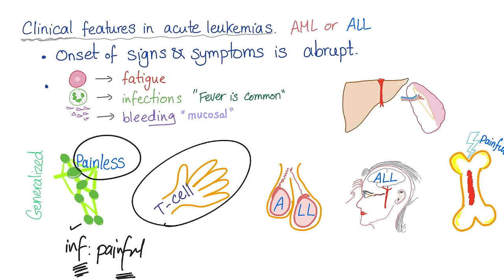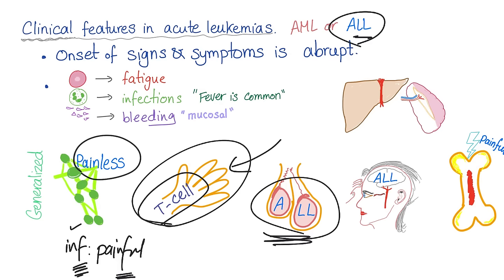These blasts go to the skin, especially T cells. They go to the testicles, especially in ALL. They cause headache, especially in ALL. And of course there is bone pain and hepatosplenomegaly.